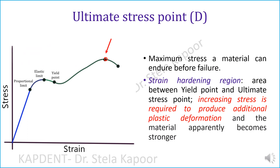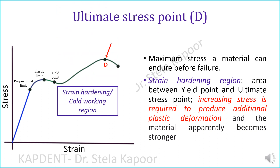The maximum stress a material can endure before failure is the ultimate stress point. One of the stages after the yield point is the strain hardening region, wherein an increased amount of force is applied to produce plastic deformation, since the material becomes stronger.